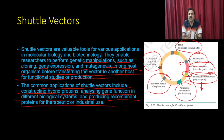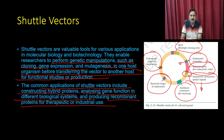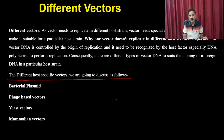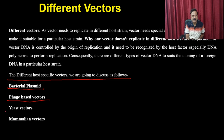So far we have discussed cloning vectors, expression vectors, and shuttle vectors — a generalized discussion of different types of vectors. Now let us move on to discussing vectors present in different host systems. The host-specific vectors we will discuss are bacterial plasmids, phage vectors, yeast vectors, and mammalian vectors.